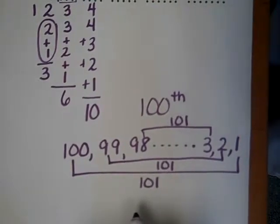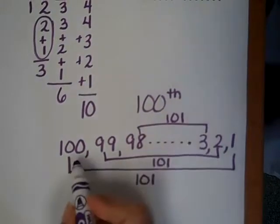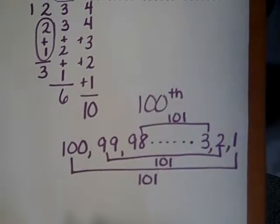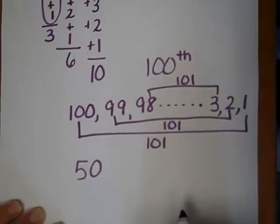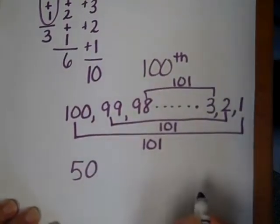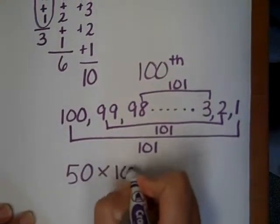And how many times would he have to do this if he wanted to get the sum of the first one hundred numbers? How many times do you think he would have to do that? Well, he calculated that it would be fifty times he would have to do that. So if he had fifty one hundred and ones, he would have fifty times one hundred and one.